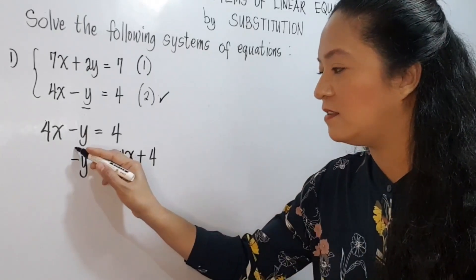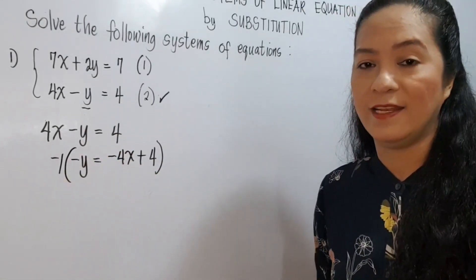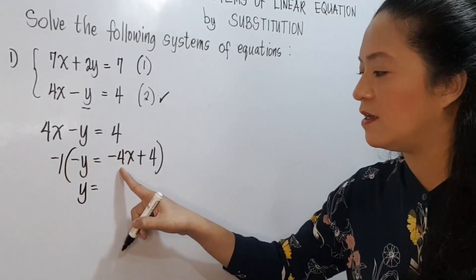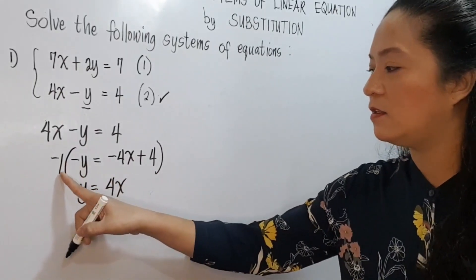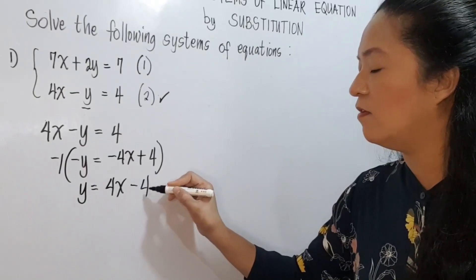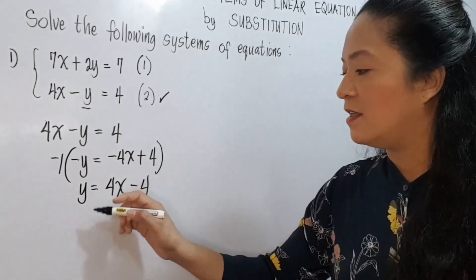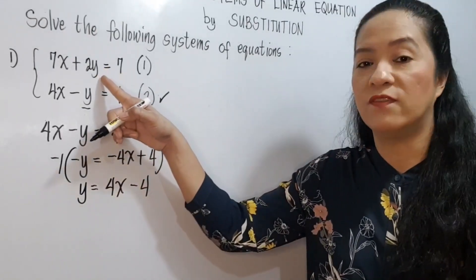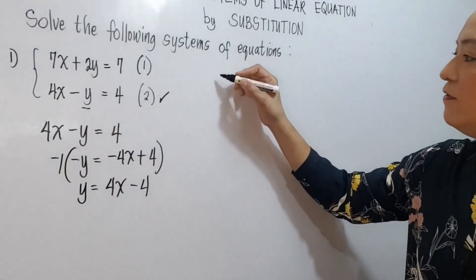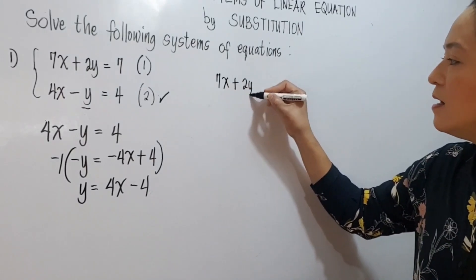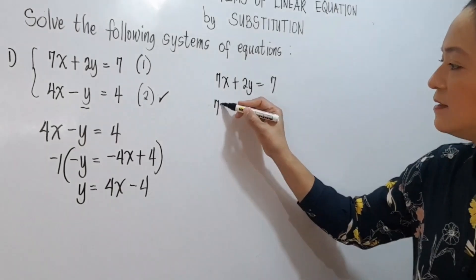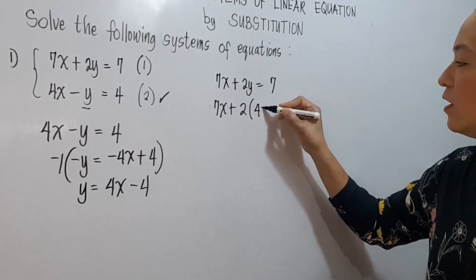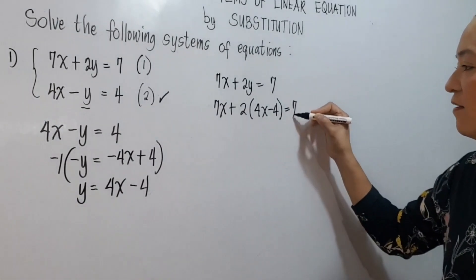Now, since y is negative, we make it positive by multiplying by negative 1. So negative 1 times negative y is y, negative 1 times negative 4x is positive 4x, and negative 1 times positive 4 is negative 4. Now the value for y will be substituted into y in the first equation. We have 7x plus 2y equals 7, so y becomes 4x minus 4, giving us 7x plus 2(4x minus 4) equals 7.